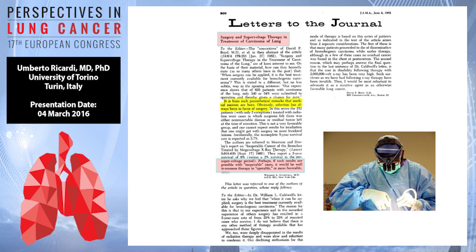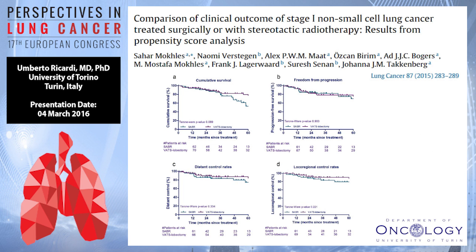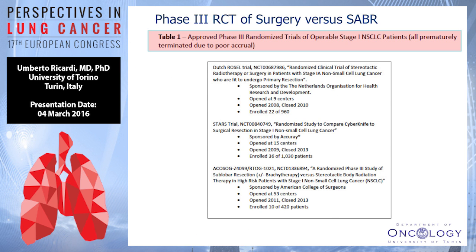The issue of debating surgery versus radiation oncology is not new. More than 50 years ago, a JAMA paper raised the possibility of considering supervoltage therapy — with its good results in inoperable patients — in operable patients as well. When comparing similar patients from both worlds using propensity score matching analysis, the literature shows many papers demonstrating similar outcomes for similar patients treated with either surgery or SBRT.